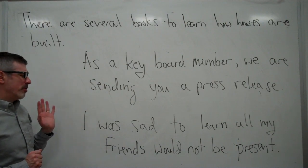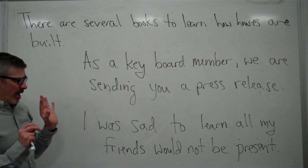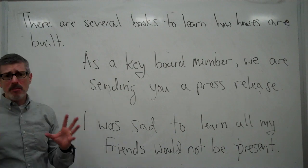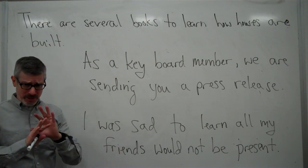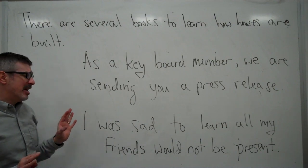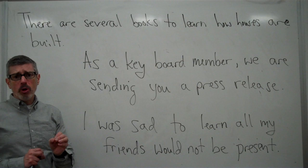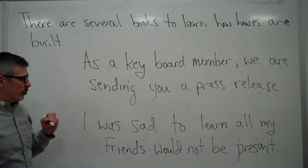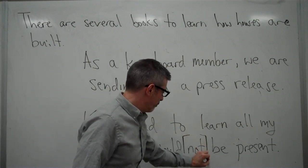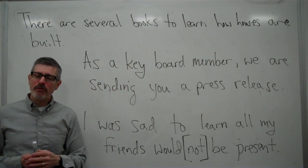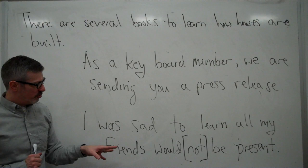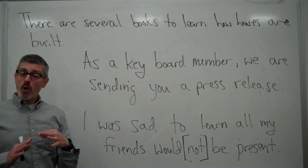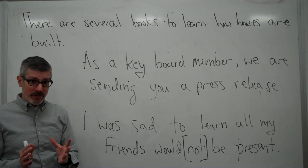It isn't clear whether what this person is saying is that not a single one of her friends would be present — that all of them would not be present, not one of them would be present — or whether it means that some but not all of the friends would be present. The problem is caused by this adverb, and as adverbs often do when they're causing trouble, this one is creating an ambiguity, because you can't tell whether it means zero of my friends will be there, or some number smaller than all of them will be there.